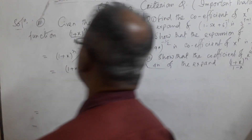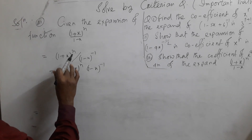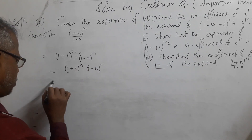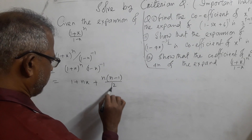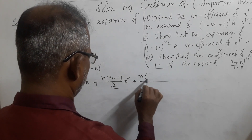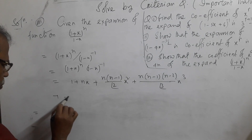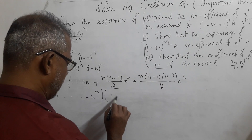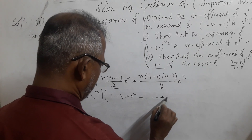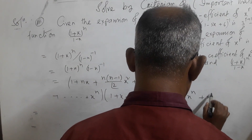Now solve this question: given the expansion of the function (1 + x)^n divided by (1 - x). So (1 + x)^n divided by (1 - x) equals (1 + nx + n(n-1)/2! · x² + n(n-1)(n-2)/3! · x³ + ... + x^n) multiplied by (1 + x + x² + ... + x^n + x^(n+1)).